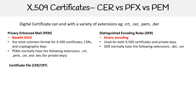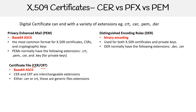Then there are certificate files — that's where we have .cer and .crt. These are base64 ASCII. They're basically interchangeable extensions with PEM. .cer is short for certificate file, .crt is short for certificate file — that's where they get confusing. So either .cer or .crt are generic file extensions.